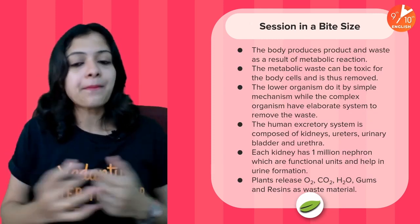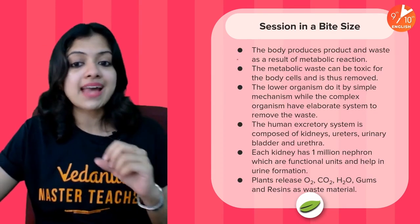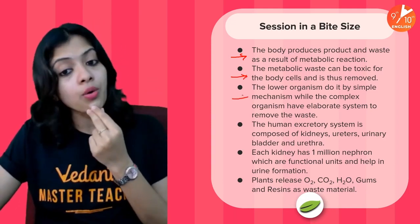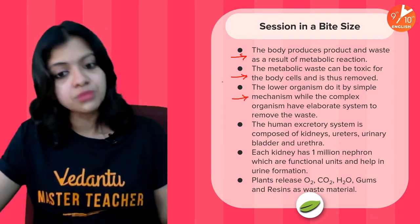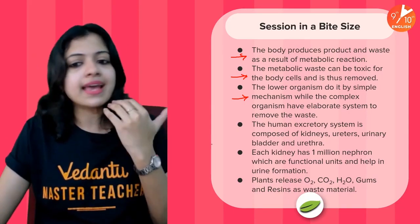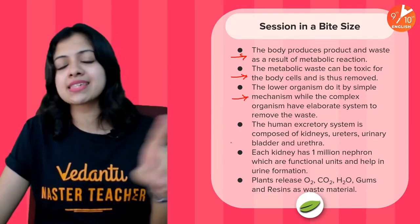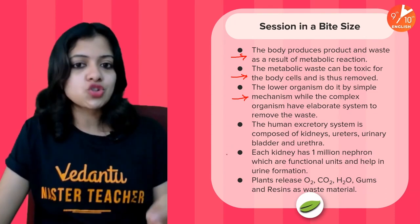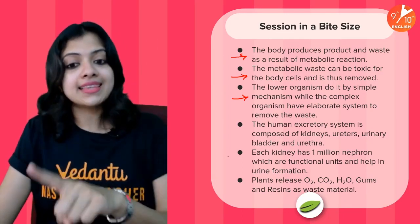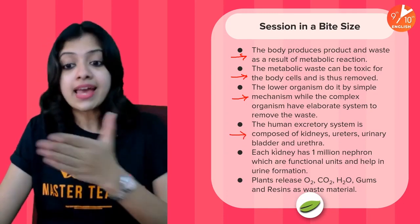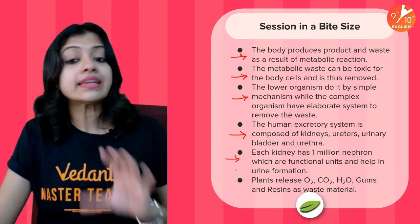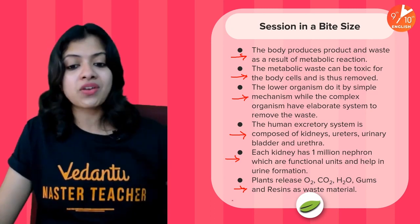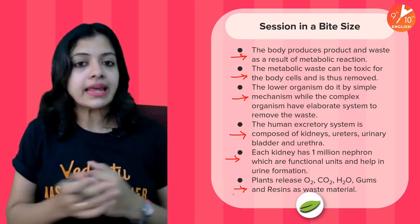Let's recap in a bite-size. The body produces waste as a result of metabolic reactions. Metabolic waste can be toxic to body cells and must be removed. Lower organisms use simple mechanisms like diffusion, whereas complex organisms have elaborate systems. Remember: excretion is not elimination of undigested food — that is ejection, which happens through the anus. The human excretory system comprises kidneys, ureters, urinary bladder and urethra. Each kidney has about one million nephrons which are functional units helping in urine formation. Plants release oxygen, carbon dioxide, water, gums and resins as waste through different processes.